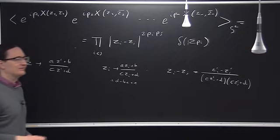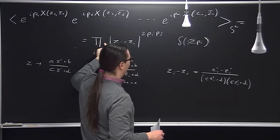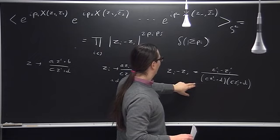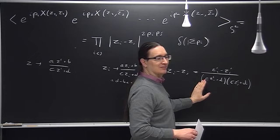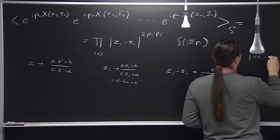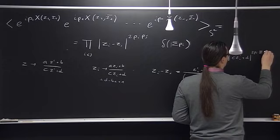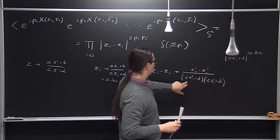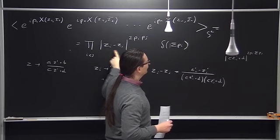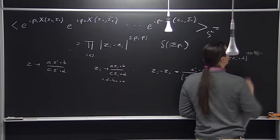When you plug this into the correlation function, you get back this factor but you also get a whole bunch of powers of (cz_i' + d) to the power 2p_i · (sum of p_j). Because you get one such factor for each difference which contains z_i. Now, momentum conservation guarantees that this equals minus 2p_i squared.